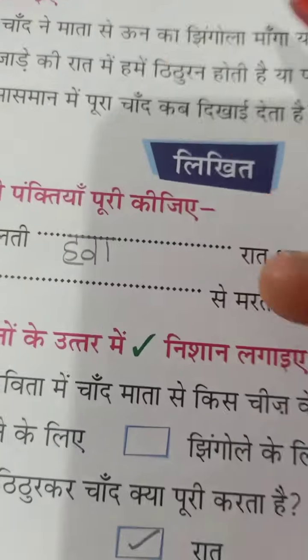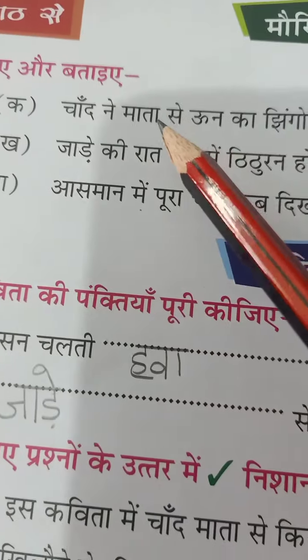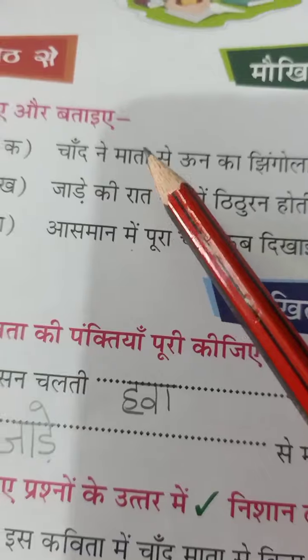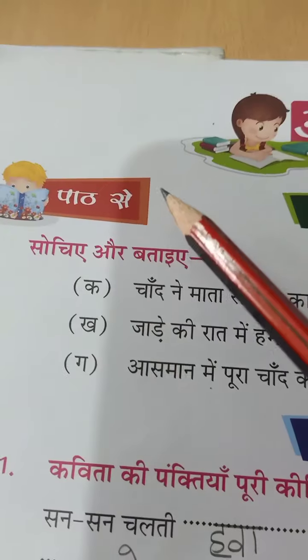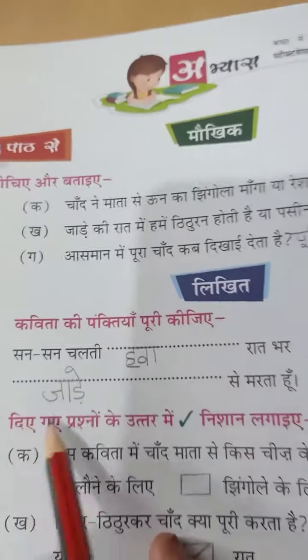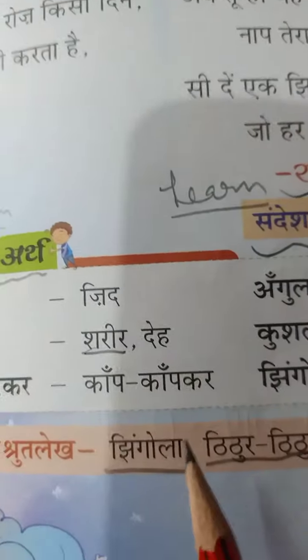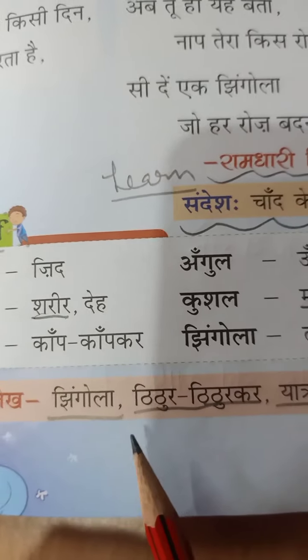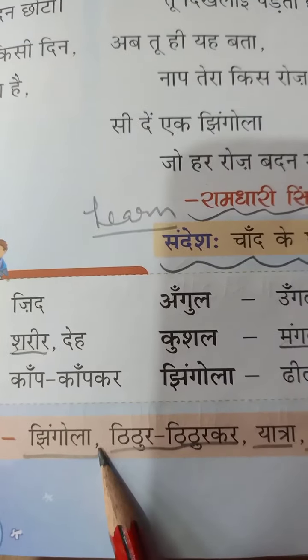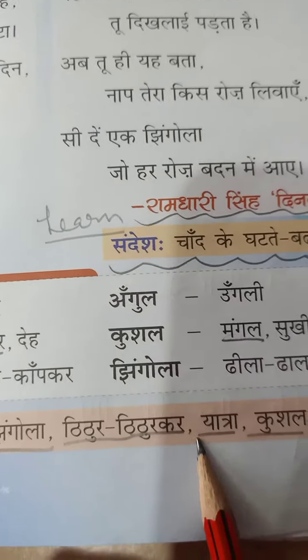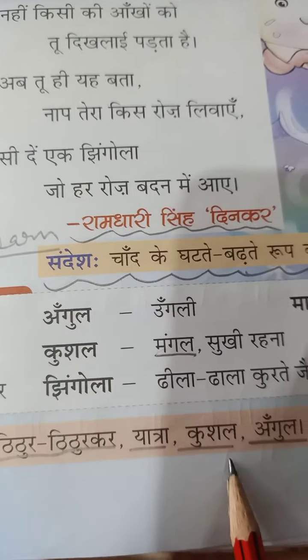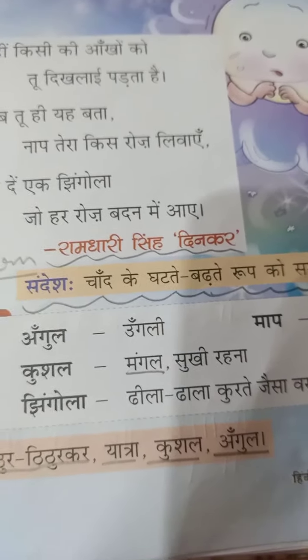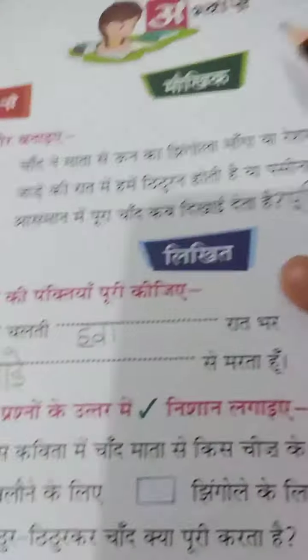Now let's go to the book exercise. Chandni, these are some words from the previous lesson - you need to read them carefully: jingola, thitur, kar jatra, kushal, angul. Next, let's go to the question answers.